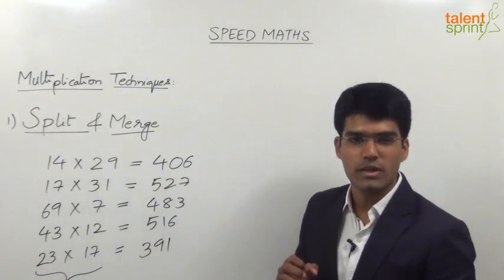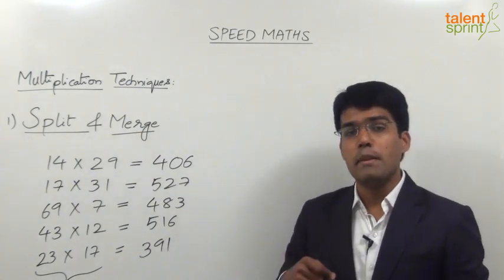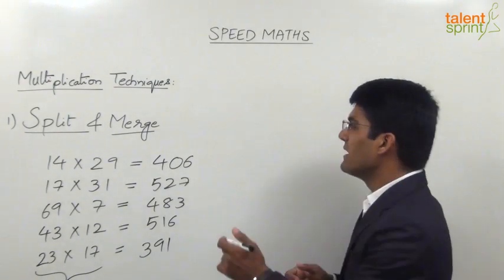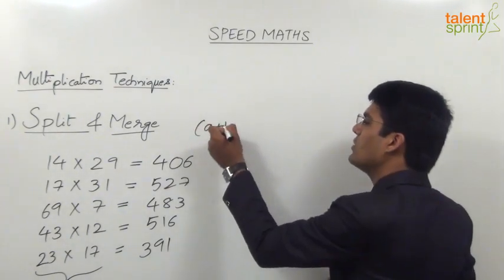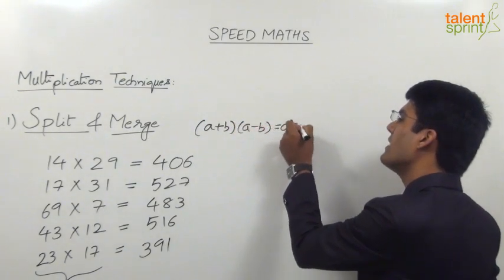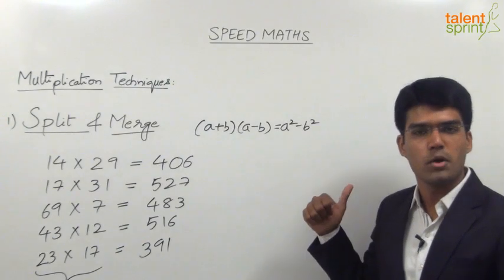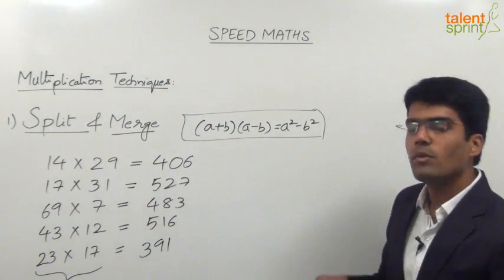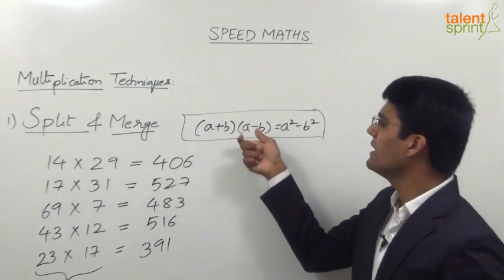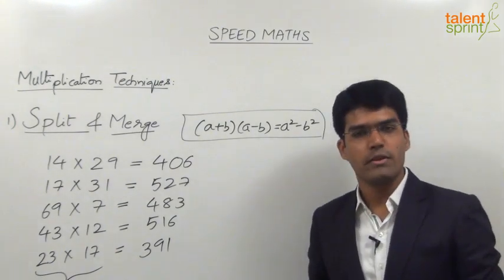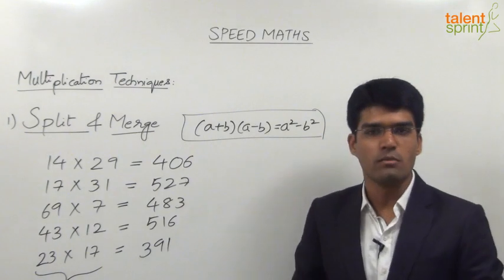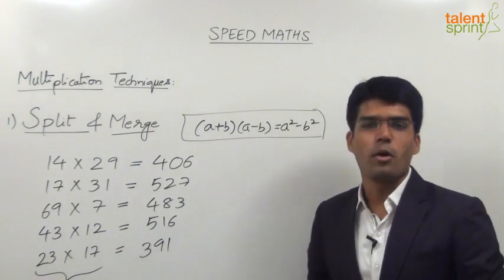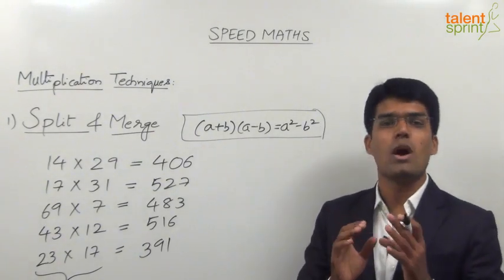If you are a smart student, the same question can be answered in a much better way. Before I tell you that method, let me find out how many of you know that (a + b)(a - b) = a² - b². This is one very simple algebraic formula learned in high school. Simply knowing the formula is not enough — you should be in a position to apply it properly.